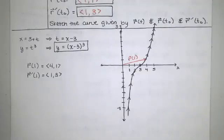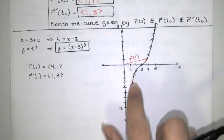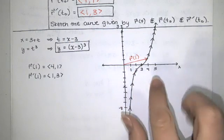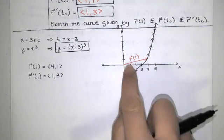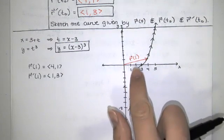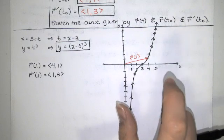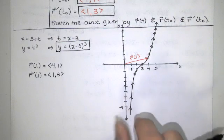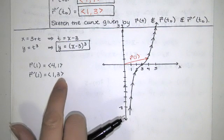So remember, r of t is just a pointer. It points to a particular location on the path. And that's the vector. We usually don't draw the vector whenever we graph the path itself. But now we are explicitly asked to draw the vector. So it's saying you are here at this location, x equals 4, y equals 1.